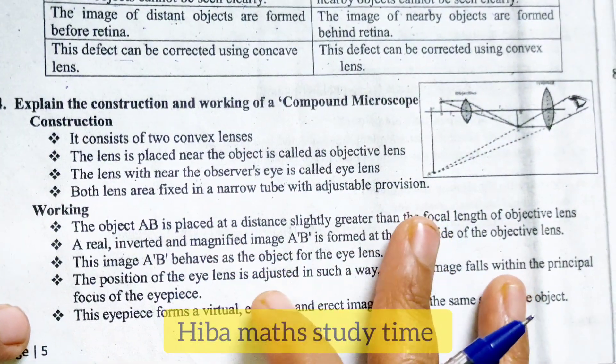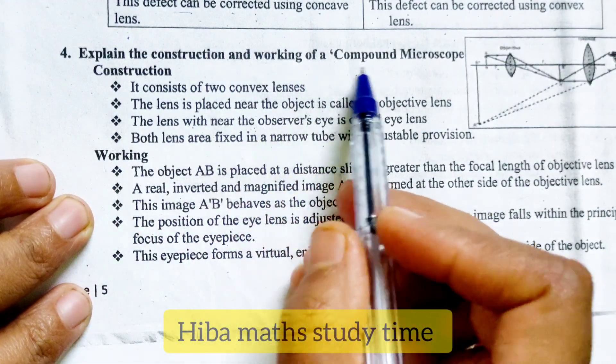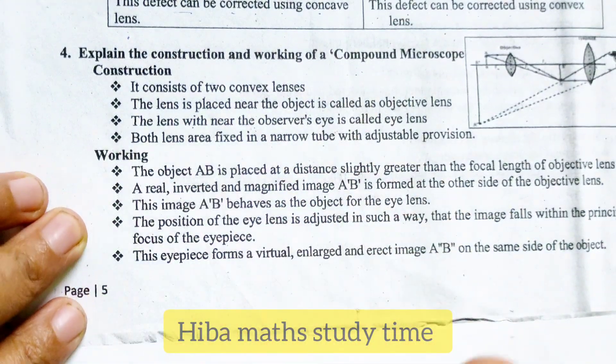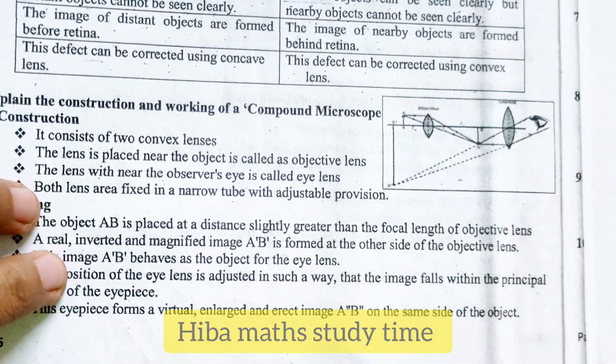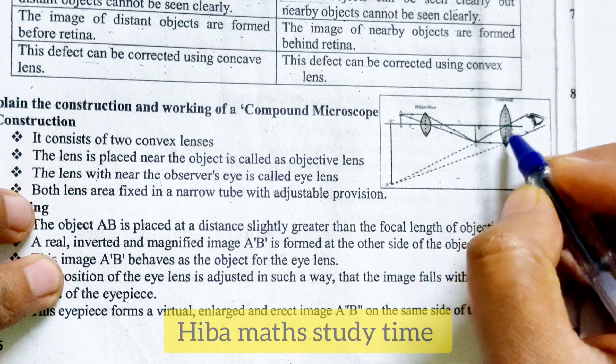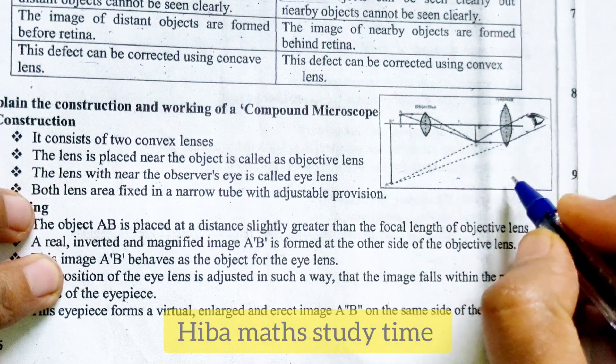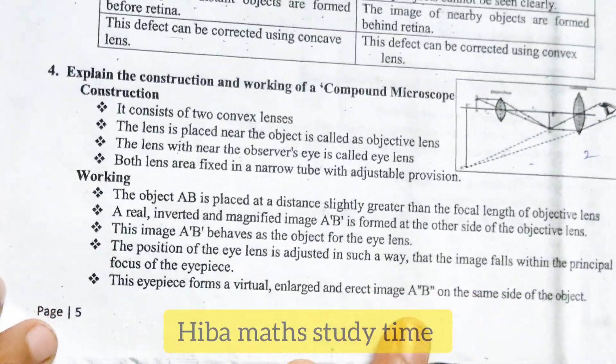Fourth question, explain the construction and working of a compound microscope. So, in the compound microscope question, you can do a diagram in the book. You can travel the eye and you can travel the lens. You can do two marks in the diagram.